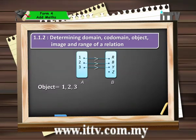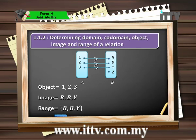The elements of A — which are 1, 2, and 3 — can also be called the objects. The elements of B which result from the objects being mapped are R, B, and Y, which can also be called the images. Hence, the range is the set of values which are the images of the objects. Notice that element Z in set B has been left out of the range, because Z was not the image of any element in the object set. So there is a difference between co-domain and range: a co-domain may include values which are not images of the objects, while the range only contains elements which are images of the object set.